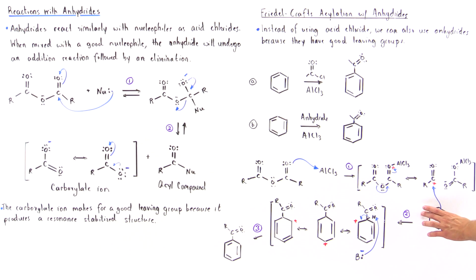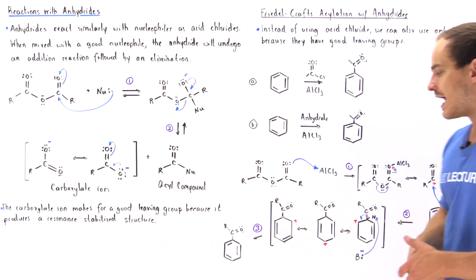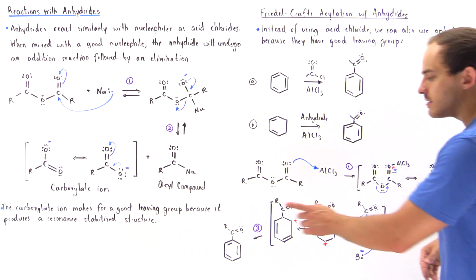So the benzene will act as our Lewis base. This will be our Lewis acid. The base will use the two electrons to form a bond between let's say this carbon and this carbon and we form this resonance stabilized intermediate. And in the final step,